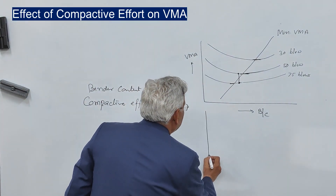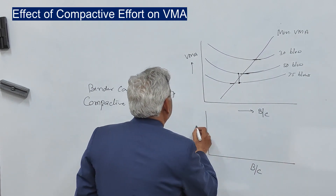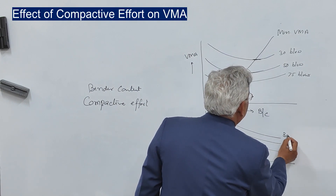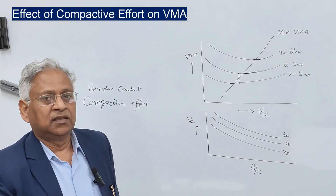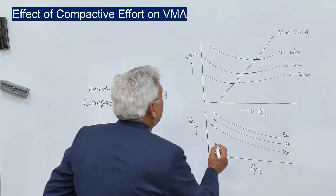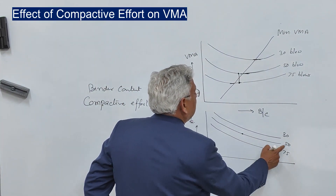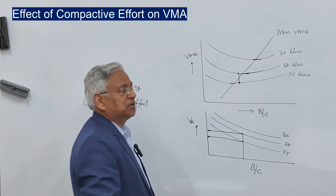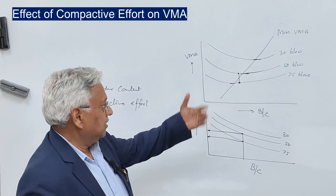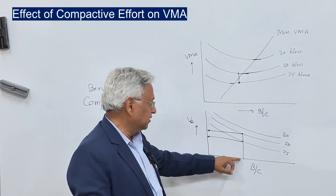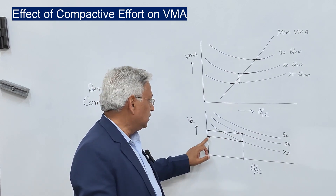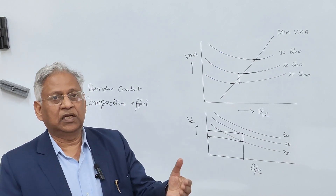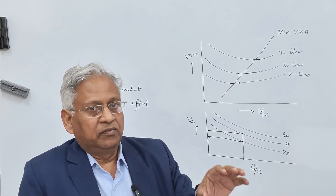You can also understand this using the variation of air voids with binder content — this is similar for 30, 50, and 75 blows. As compactive effort increases, air voids reduce. So if you design a mixture at a certain binder content for 50 blows and place it in the field with heavy actual traffic, air voids will reduce further. Conversely, if you design for 75 blows but traffic is light, air voids will be more than designed, causing aging and premature failure of the pavement.